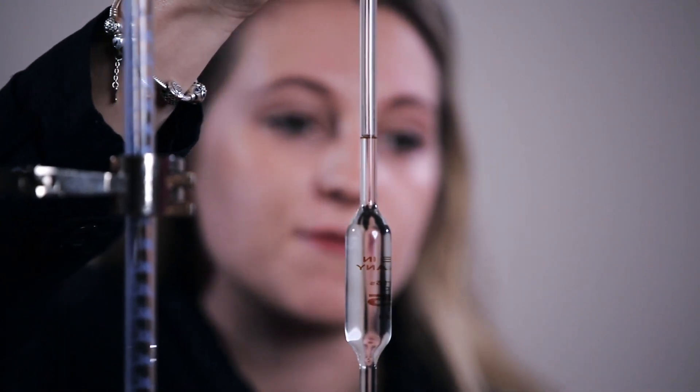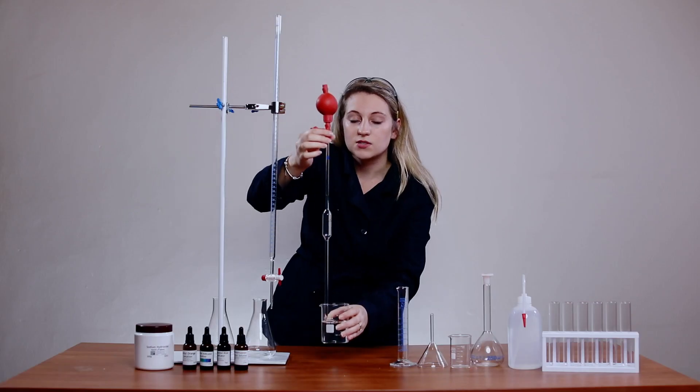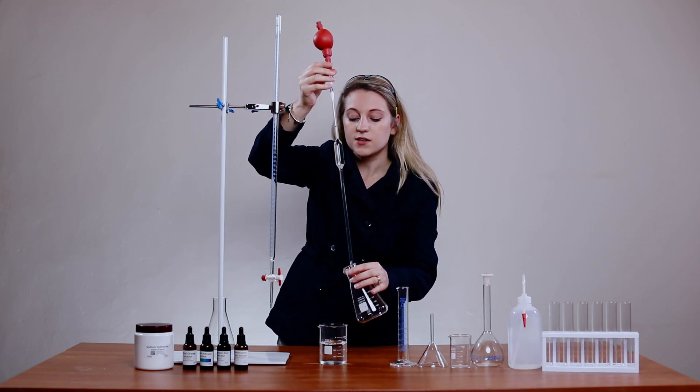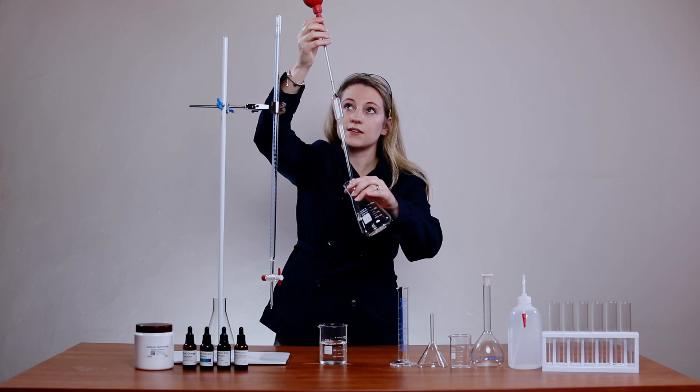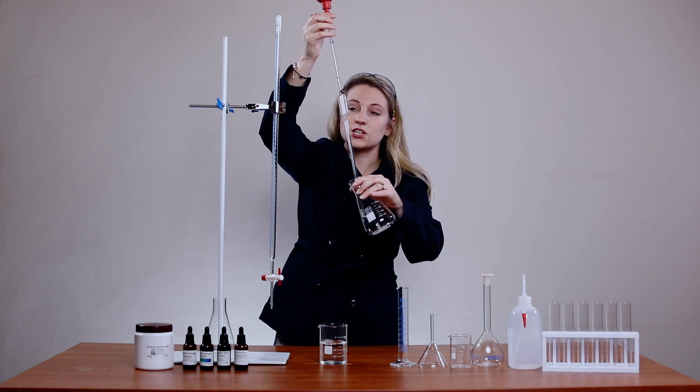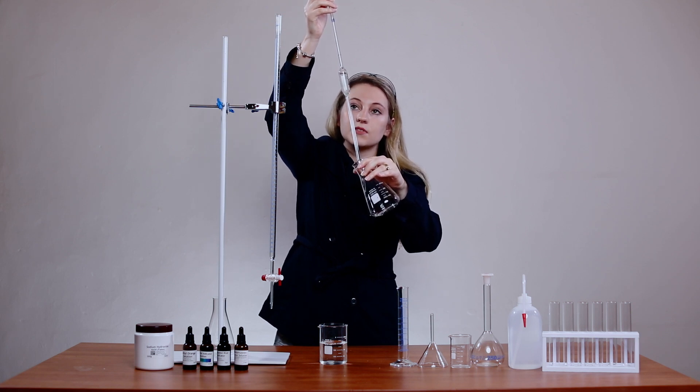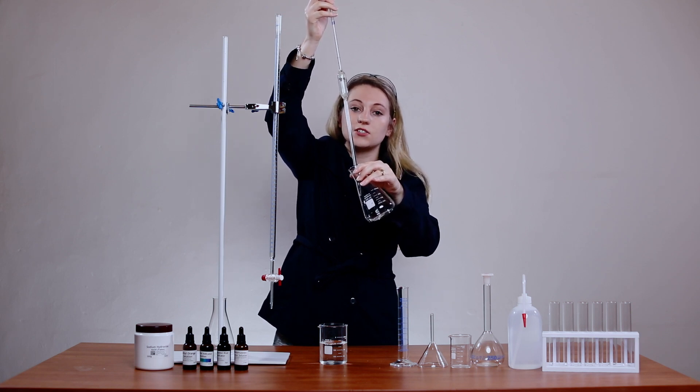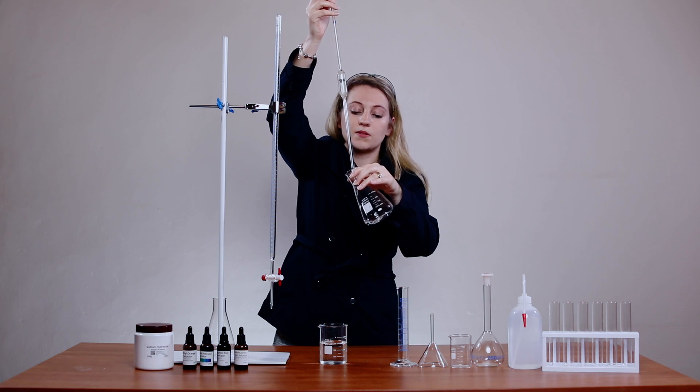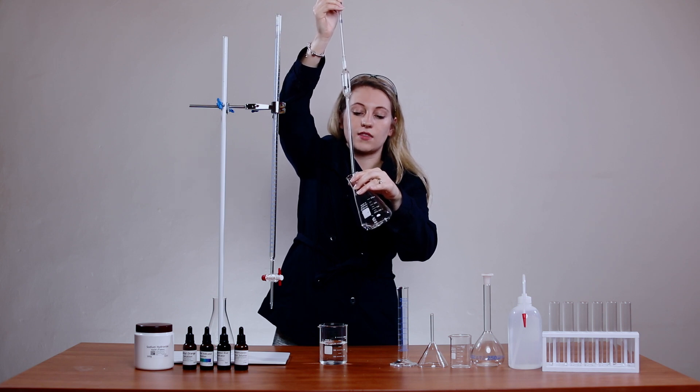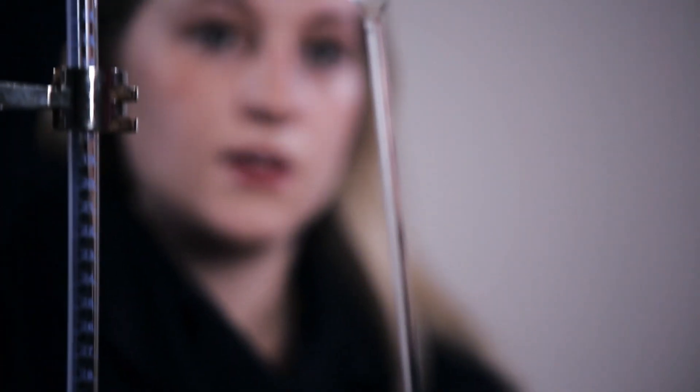Now I'm going to take this solution and put it into my Erlenmeyer flask, tilting this beaker and then pressing the eject button on the red pipette filler. Make sure that you tilt your beaker; this helps so that you literally get that last drop out into your flask. You want all of that liquid to go in there and you want to be as accurate as possible.